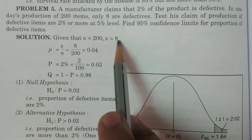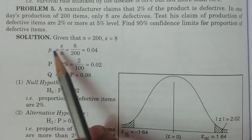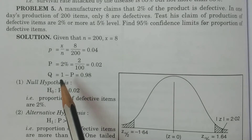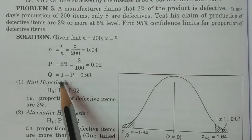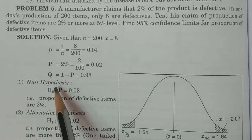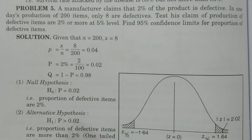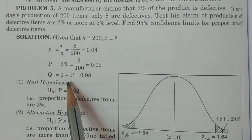n is equal to 200, x is equal to 8. The attribute x is the number of defectives. Small p, the sample proportion, equals x by n, which is 8 by 200, giving 0.04. Capital P, specified for the entire production process, is 2% — that is 0.02. Out of every 100 items, 2 items are considered defective. Q equals 1 minus P, which is 0.98.